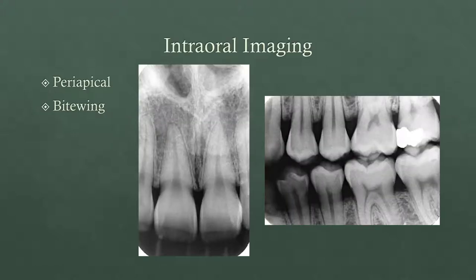These are the two main types of intraoral imaging. You have your periapical, seen here on your left, and your bitewing here on the right. With the periapical, you're looking at the entire tooth — you want to see the entire crown and the entire roots of the teeth, so the entire length of the roots, so you can see the PDL and make sure it's nice and uniform.